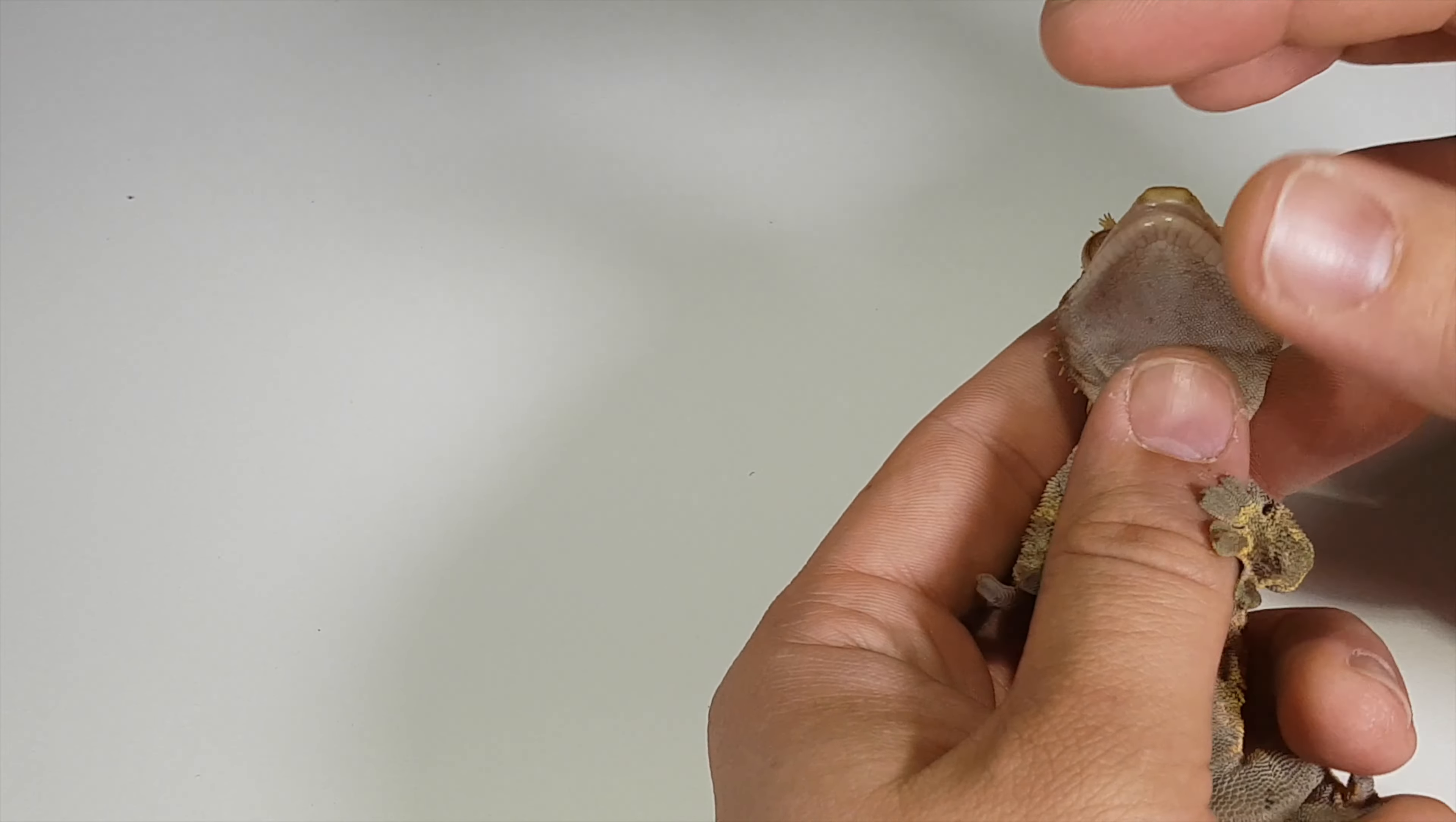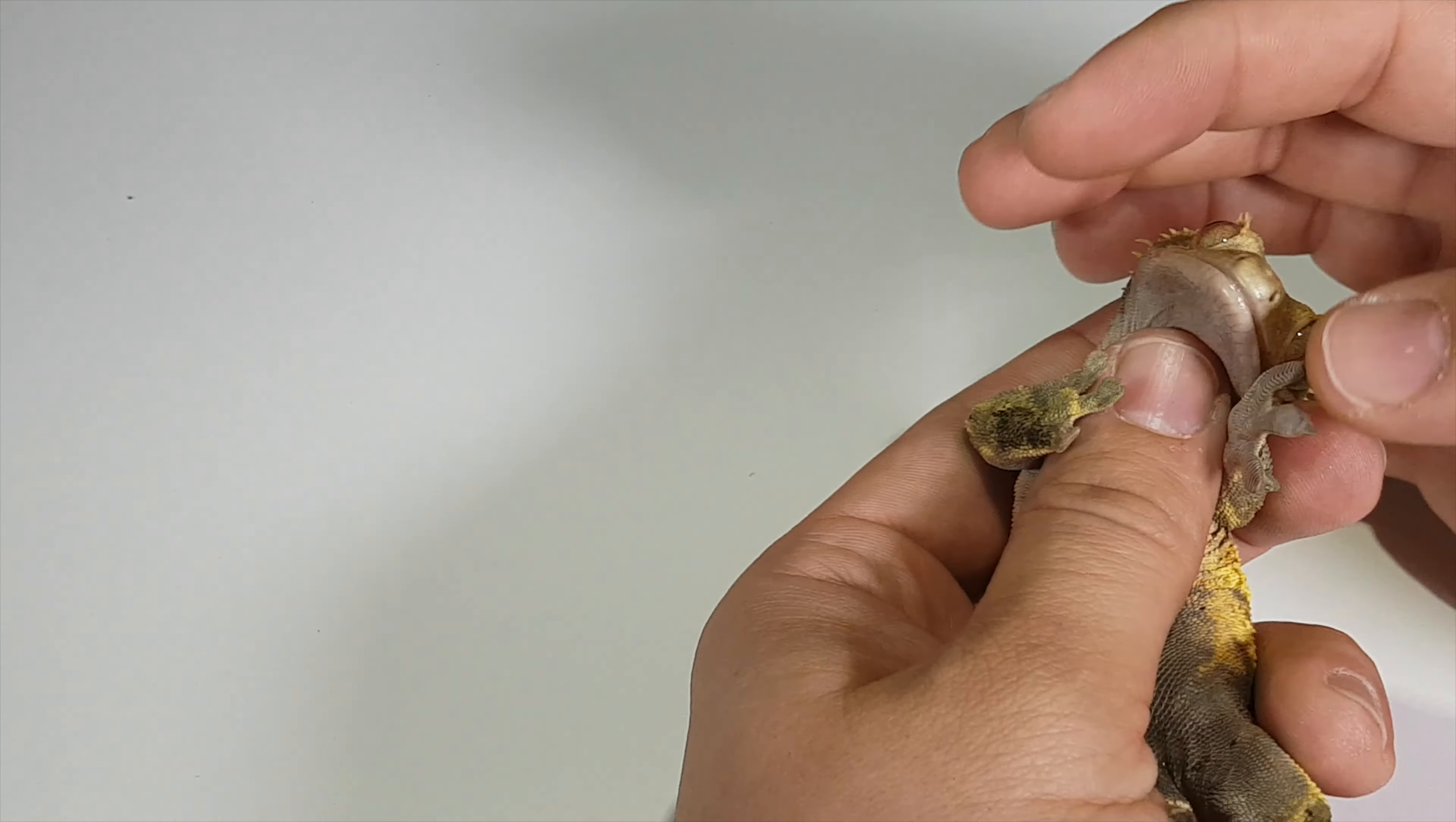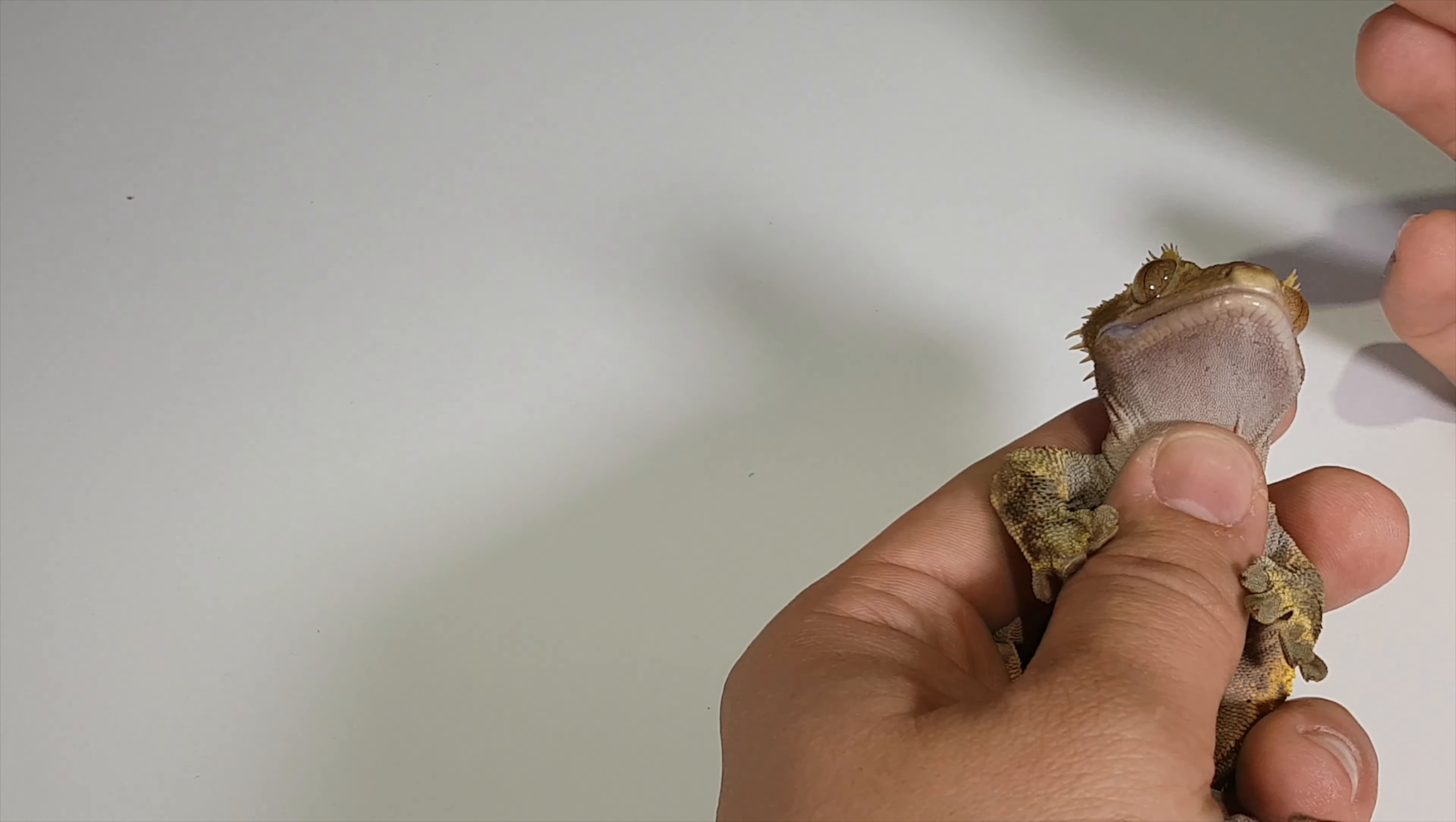If they struggle, just allow him to move around, you don't want him to get too stressed out and lose his tail. There you go, you can see the calcium sacs there. Keep in mind that males have smaller calcium sacs than females do, so it's really hard to see it here. So let's see a female.